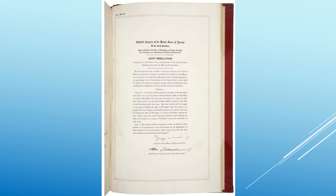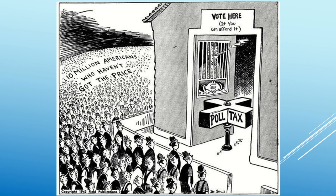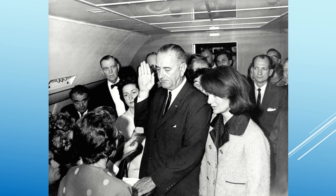The 22nd Amendment, adopted in 1951, limited presidents to two terms. Before, it was just one of those things that presidents did, and then they decided they actually needed something to really limit the president to two terms. The 23rd Amendment, enacted in 1961, allowed residents of the District of Columbia to vote in presidential elections. The 24th Amendment, ratified in 1964, prohibited a poll tax in federal elections. The 25th Amendment in 1967 provided a system for selecting a new vice president after the death or resignation of a president, and also established a system to deal with the possibility that a president might become disabled.